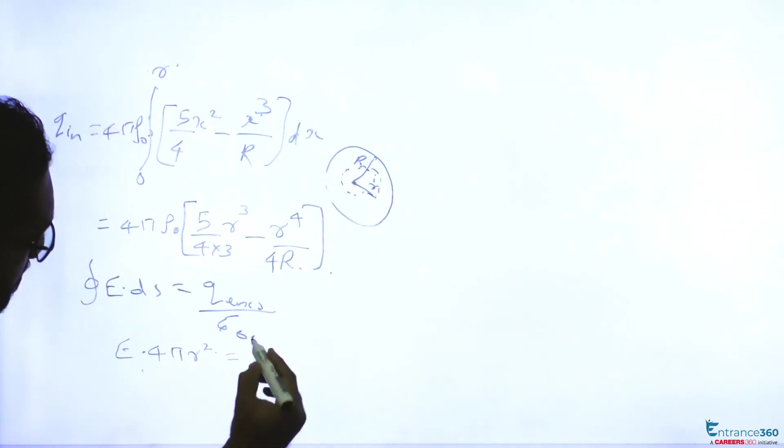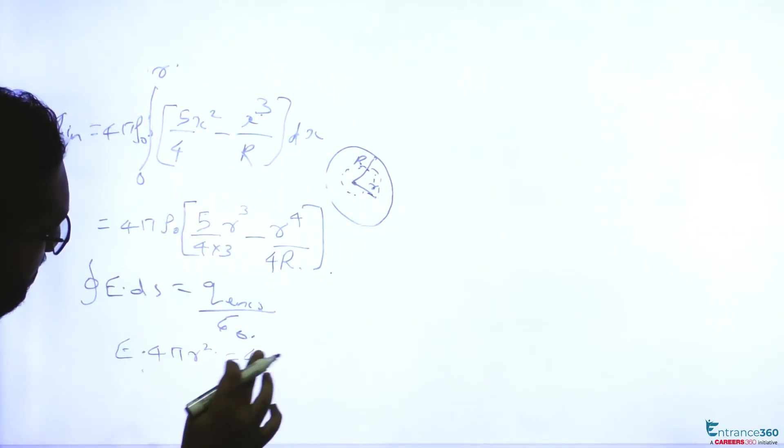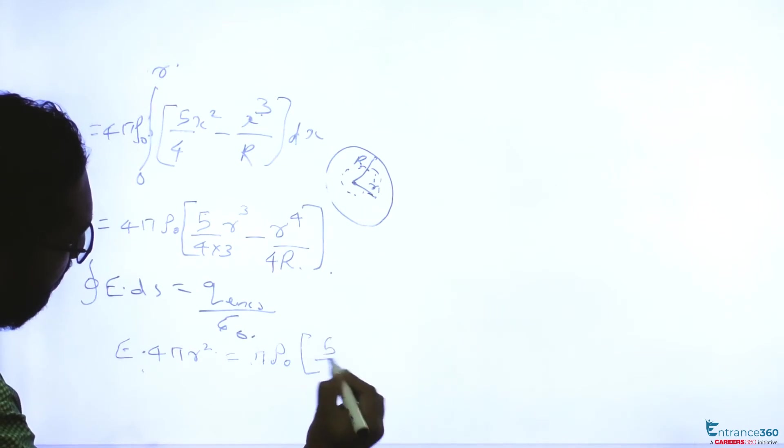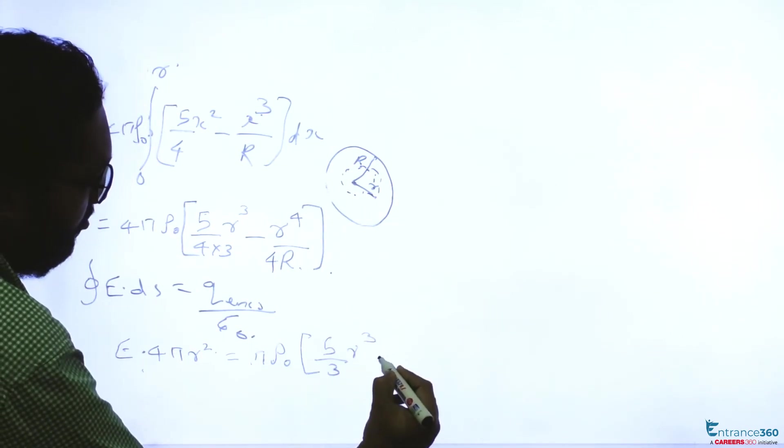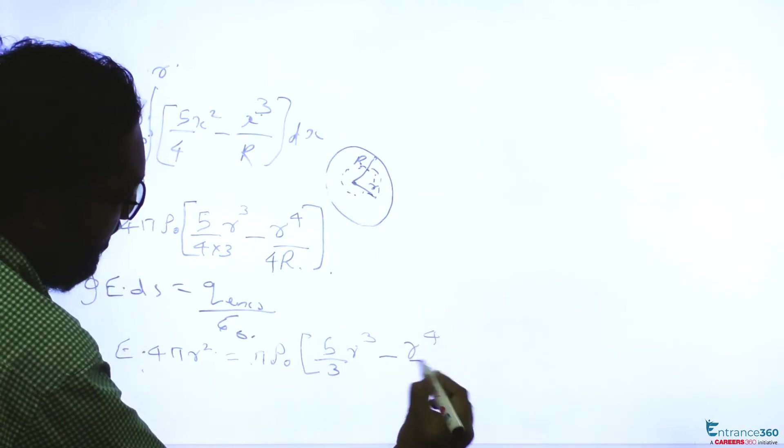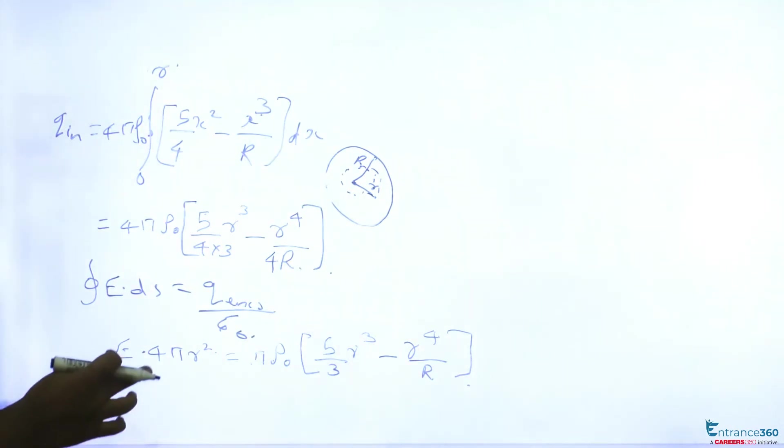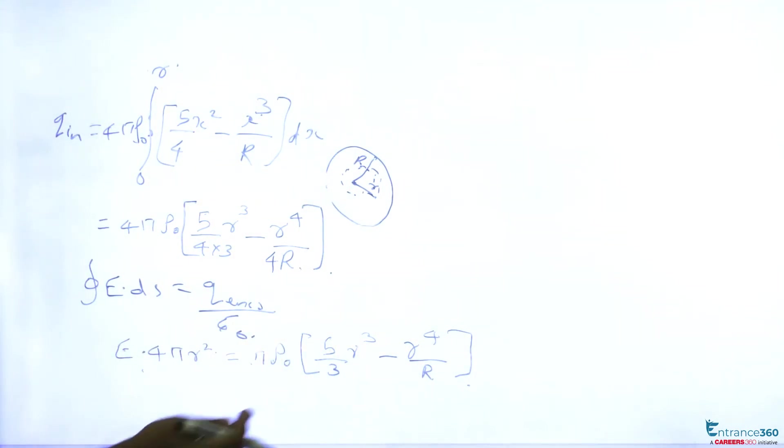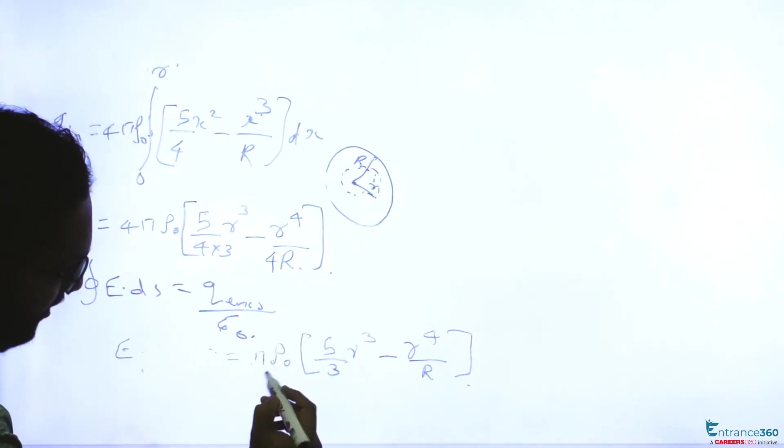Upon 4π, we can take 4 inside. So it will be πρ₀ into (5/3)r³ - r⁴/R. Now we are taking this 4πr² to the denominator.